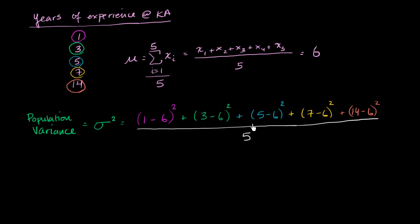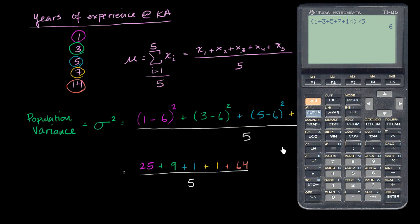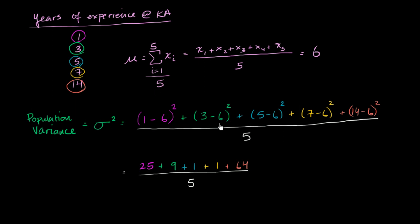Let me calculate this. 1 minus 6 is negative 5; squared gives 25. 3 minus 6 is negative 3; squared gives 9. 5 minus 6 is negative 1; squared gives 1. 7 minus 6 is 1; squared gives 1. 14 minus 6 is 8; squared gives 64. So 25 plus 9 plus 1 plus 1 plus 64 divided by 5 equals 20. The mean squared distance from our population mean is 20.